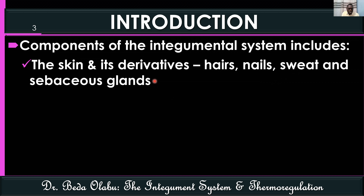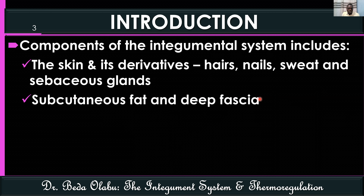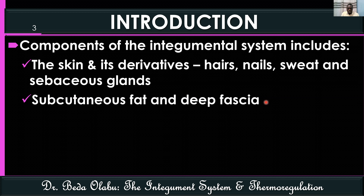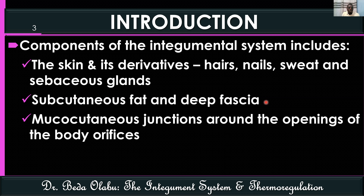The integument system is not just limited to the skin and its appendages. It also includes the subcutaneous tissue, which is largely adipose tissue — the fat beneath the skin — and the associated deep fascia, which separates the fat from the underlying skeletal musculature. Also included are the mucocutaneous junctions: junctions around the openings of body orifices, such as between the skin and the inner lining of the lips and the anal canal.